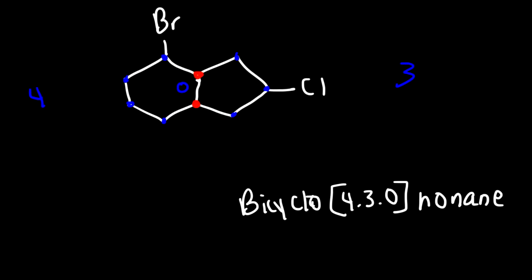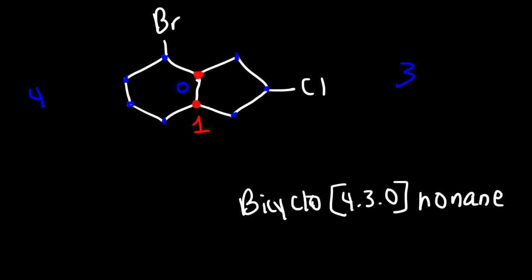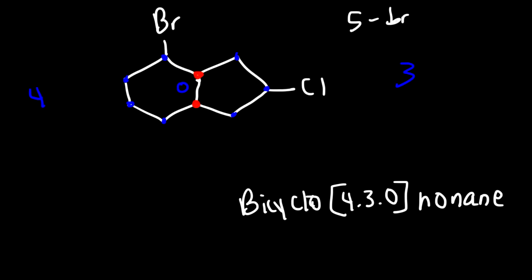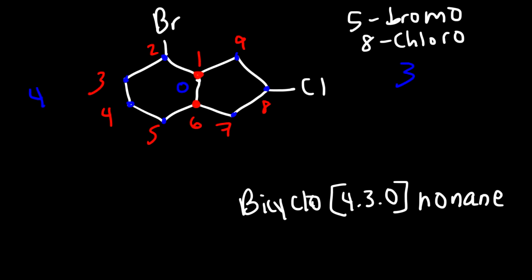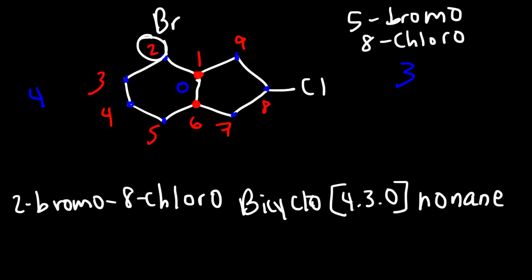We should always count starting with the larger ring. On the left we have a six-carbon ring, on the right it's a five-carbon ring, so we need to number the larger ring first. Starting with the bridgehead carbon at the bottom, the bromine atom will be on carbon five and the chlorine atom will be on carbon eight — so that would be 5-bromo and 8-chloro. Now if the other bridgehead is carbon one, the chlorine atom is still on carbon eight but the bromine atom is on carbon two. That gives us lower numbers for the substituents, so we go with that direction. The final name is 2-bromo-8-chlorobicyclo[4.3.0]nonane. And so that's how you can name bicyclic compounds.